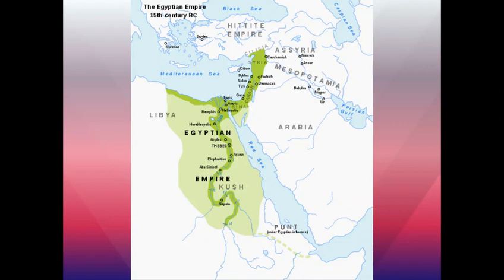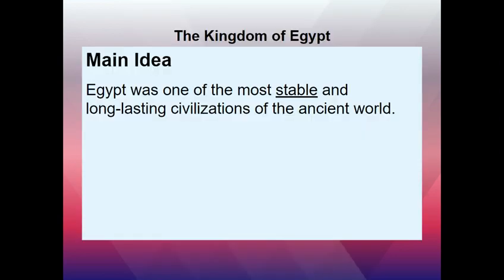Egypt is part of Africa and spans an area that's mostly desert, but part of Egyptian culture and civilization would eventually extend into what we know as Mesopotamia and the Fertile Crescent. We're basically going to be talking about how Egypt is one of the longest-lasting empires, government systems, and civilizations to exist to this day.